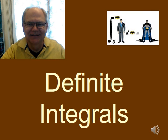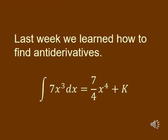With that in mind, we're going to talk this week about what are called definite integrals. You should remember from last week that we learned all about antiderivatives — for example, the antiderivative of 7x³: you add 1 to the exponent to get x to the 4th, then divide by the new exponent, giving you 7/4 x⁴ plus k.